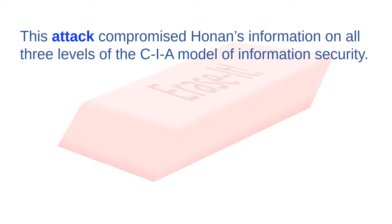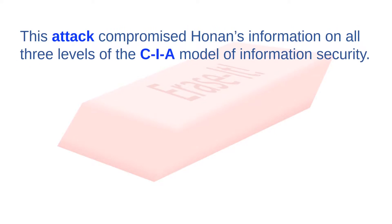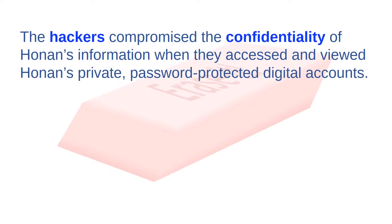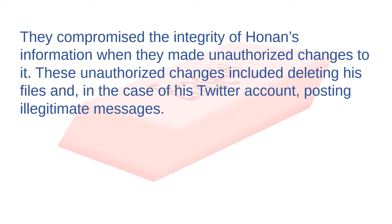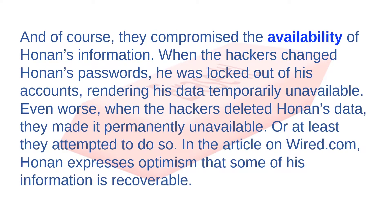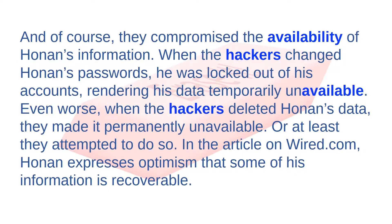This attack compromised Honan's information on all three levels of the CIA model of information security. The hackers compromised the confidentiality of Honan's information when they accessed and viewed his private, password-protected digital accounts. They compromised the integrity of Honan's information when they made unauthorized changes to it — including deleting his files and posting illegitimate messages on his Twitter account. And they compromised the availability of Honan's information. When the hackers changed his passwords, he was locked out of his accounts, rendering his data temporarily unavailable. When they deleted his data, they made it permanently unavailable — or at least attempted to. Honan expressed optimism that some of his information is recoverable.